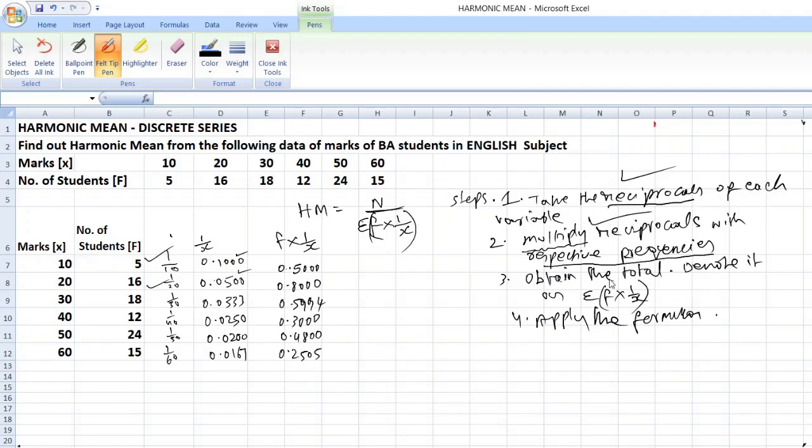So, after that obtain the total. Next is obtain the total. Okay. Denote it as summation f into 1 by X. You can write like this also. Okay. That comes to 2.9 2 double nine.